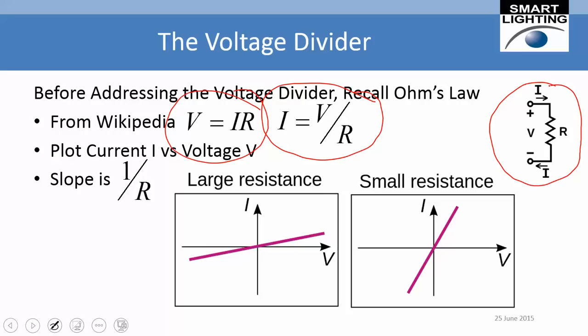One of the more useful ways of looking at this is that because voltage and current are related by a constant — the resistance — if you plot voltage versus current you should get a straight line, as shown in the two figures below. Here I have voltage on the horizontal scale and current on the vertical scale. If you happen to have a large resistance, the slope is going to be fairly small. If you have a small resistance, the slope will be fairly large, because we're plotting current versus voltage, not voltage versus current. So the higher the resistance, the lower the slope.